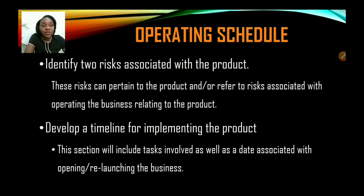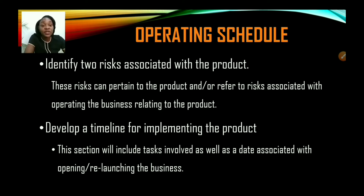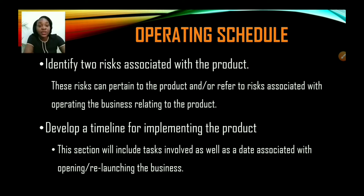The operating schedule is basically a timeline that will showcase what you'll do at certain stages of the business until you have your launch or opening. Idea conception, market research, testing of product — all of those will come under your operating schedule or your timeline. You're going to identify two risks associated with the product. These can be risks that pertain to the product, or risks associated with operating the business that are also related to the product. When you're developing a timeline, you start from the conception of the idea to where you would launch the product — for example, if you start in October 2020, idea conception; November 2020, it's another activity.